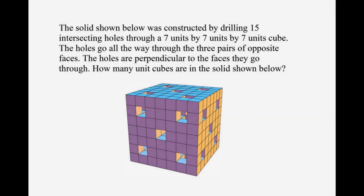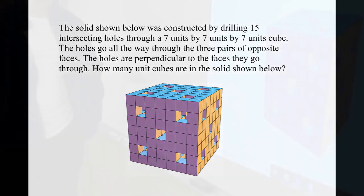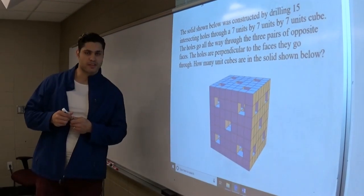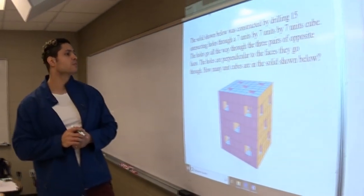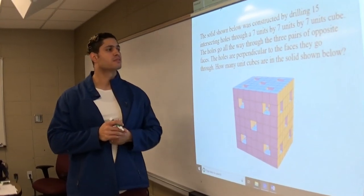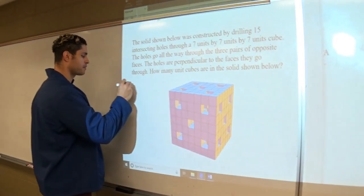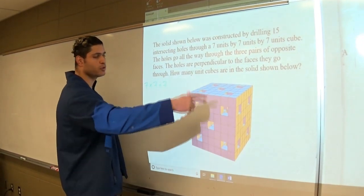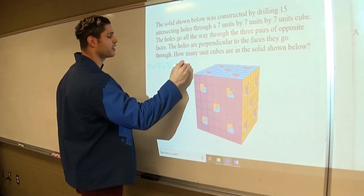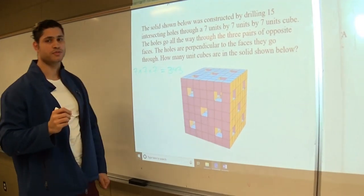So here we have this problem with the cube — a 7 unit cubes by 7 units by 7 units. The cube as a whole has 343 unit cubes.